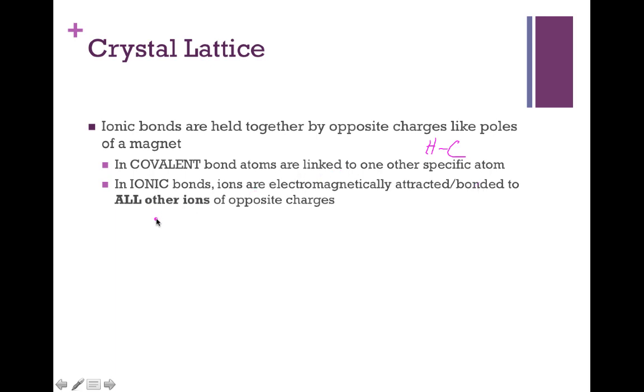In ionic bonding, the electromagnetic attraction is non-discriminatory. It's just being attracted to all other ions of the opposite charge. So any positively charged ion is going to be attracted to any negatively charged. There's no exclusivity like there is in a covalent bond. What this results in is a network of linked atoms held together by alternating charge as opposed to just one atom being linked.